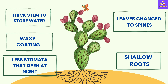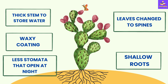To summarize, the five main adaptations of cactus plants are: a thick stem to store water, a waxy coating, less stomata that open only at night, leaves modified or changed to spines, and shallow widespread roots.